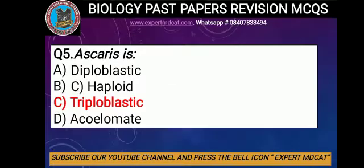Question number 5: Ascaris is triploblastic. Triploblastic means that they have three germ layers: mesoderm, endoderm, and ectoderm.